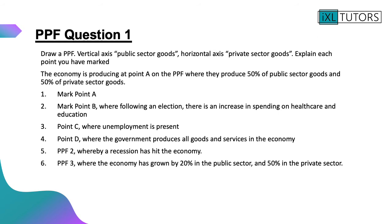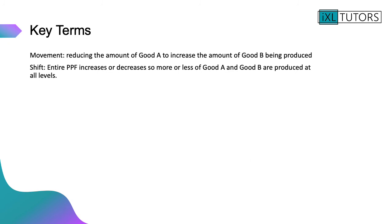Now let's have a look at some key terms. Two key terms to think about when talking about PPFs — and this also relates to later topics in micro, supply and demand, and in Year 13 cost and revenue curves. The first is a movement: a movement is when reducing the amount of good A causes you to be able to increase the amount of good B being produced. You can also shift your curve — that's when the entire PPF increases or decreases, so more or less of good A or B are produced at all levels.